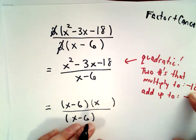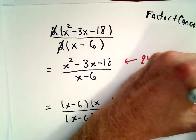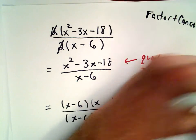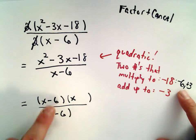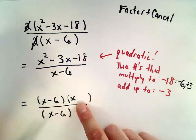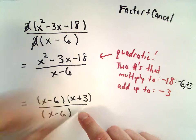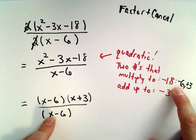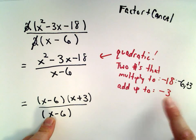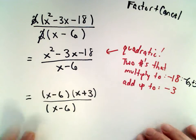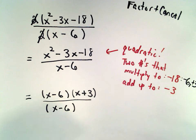And the idea is we put one number in one set of parentheses and we put the other number in the other set of parentheses. And notice negative 6 plus positive 3, that does add up to negative 3. So this is in fact our correct factorization.